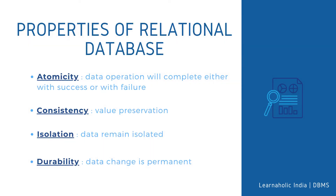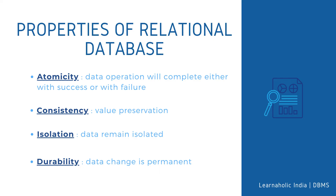Let's take a look at properties of relational database. There are four commonly known properties of a relational model known as ACID properties. A means Atomicity — this ensures the data operation will complete either with success or with failure; it follows the all-or-nothing strategy. For example, a transaction will either be committed or will abort. C means Consistency — if we perform any operation over the data, its value before and after the operation should be preserved. For example, the account balance before and after the transaction should be correct and remain conserved.